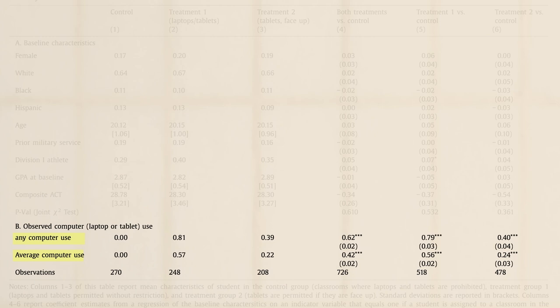The researchers must show that students allowed to use computers took advantage of the opportunity to do so. If they didn't, then there's really no treatment. Ah. Luckily, 81% of those in the first treatment group used computers, compared with none in the control group, and many in the second tablet treatment group used computers as well. These differences in computer use are large and statistically significant.